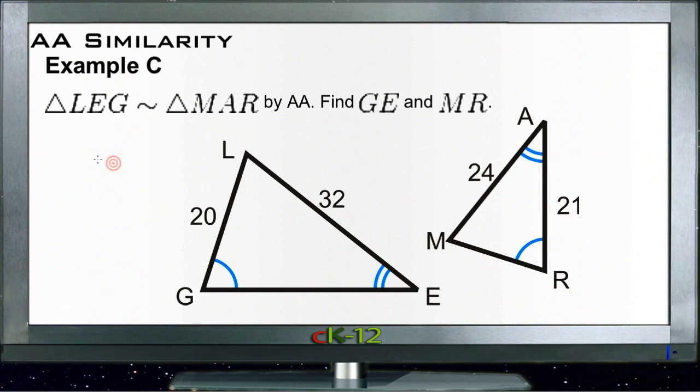For example C, we have triangle LEG is similar to triangle MAR by AA. We know that's true because we have angle E here marked with two hashes congruent to angle A also marked with two hashes, and angle R is congruent to angle G, each marked with one single arc. We need to find GE, which would be this side down here, let's call that Y, and MR which is this one over here, we'll call that X.